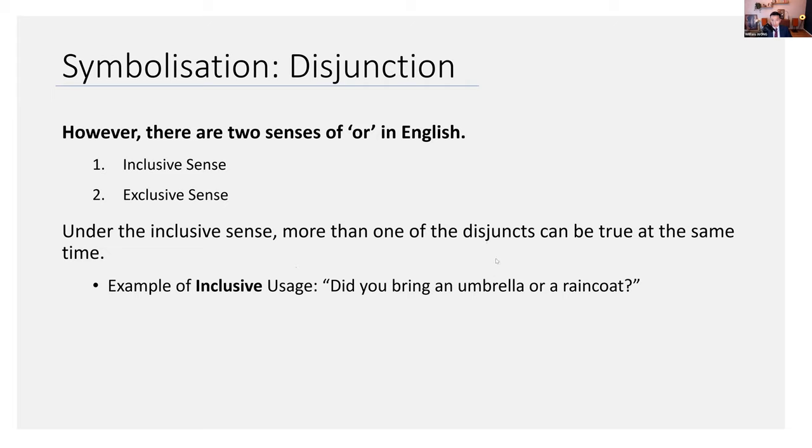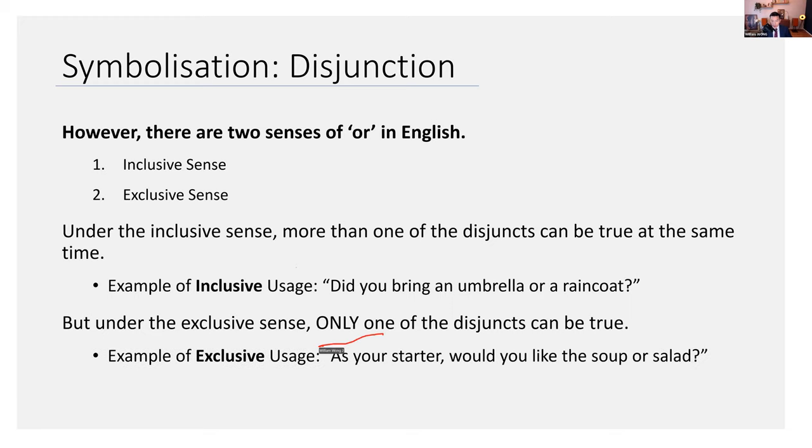Here's an example. Did you bring an umbrella or a raincoat? What we mean here is, did you bring an umbrella? Did you bring a raincoat? Or did you bring both? You might be asking, did you bring an umbrella and a raincoat? But under the exclusive sense, only one of the disjuncts can be true. I use the restaurant example, and I think this is a really good one. Seldom do any restaurants let you choose more than one starter. So under the exclusive sense of or, you can only have one of these.